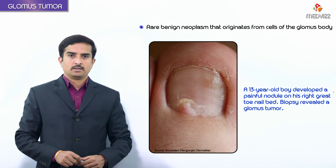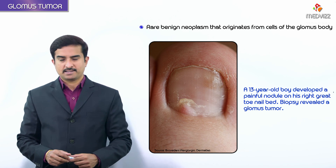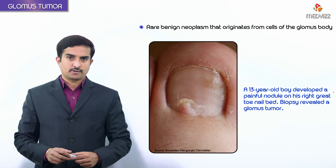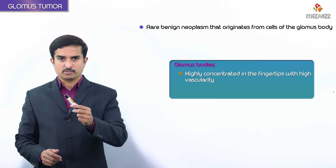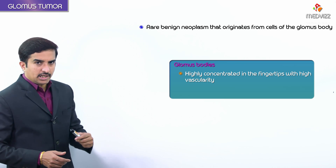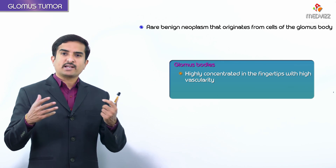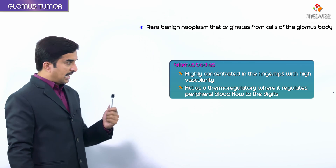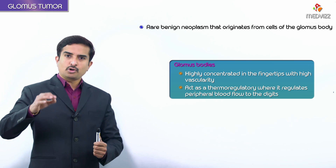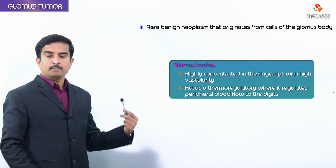In vascular pathology, the next topic is the glomus tumor. The glomus tumor is a very rare benign neoplasm that originates from the cells of the glomus body. These glomus bodies are highly concentrated in the fingertips with very high vascularity, and they act as a thermoregulatory structure, regulating peripheral blood flow.